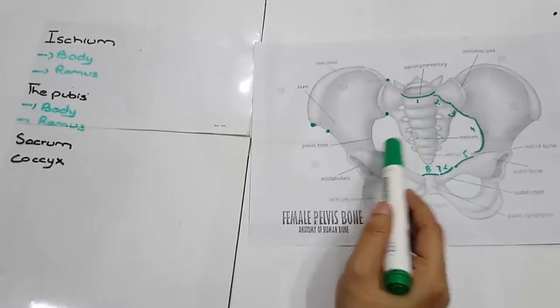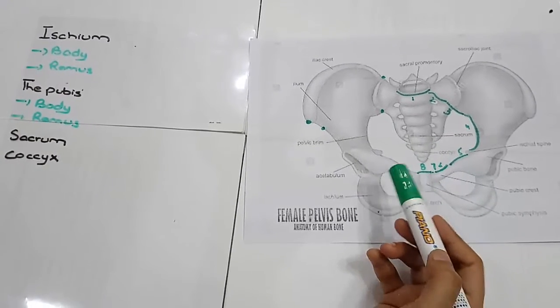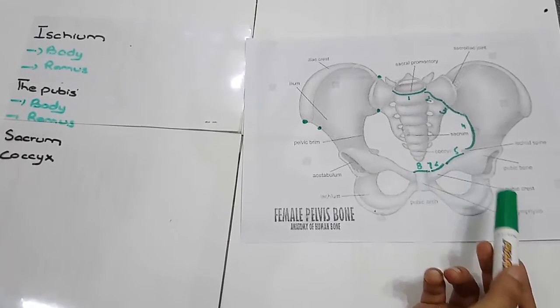This is an important landmark in midwifery and obstetrical practice. The station of fetal head is estimated in relation to the ischium spine, allowing the assessment of progress of labor.